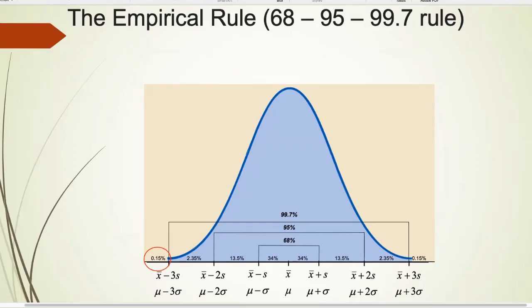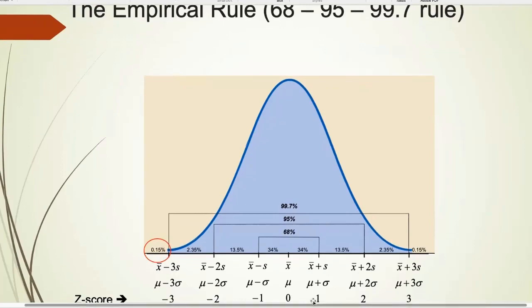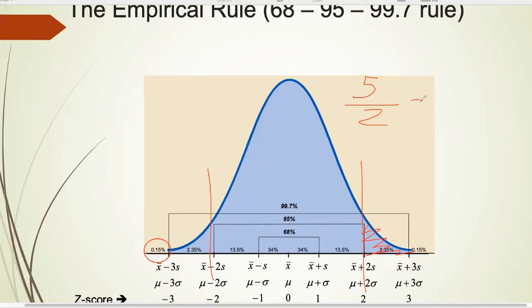If asked for the probability of someone's height being more than 2 standard deviations above the mean, you use the bell curve. Between plus and minus 2 is 95%, so the remaining area is 100% minus 95% = 5%. Because of the symmetry of the bell curve, you divide by 2 — that gives you 2.5% in each tail.